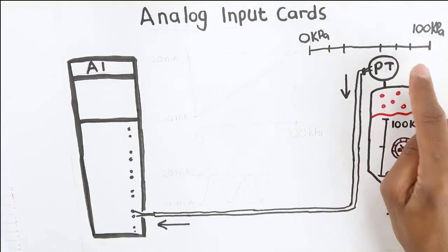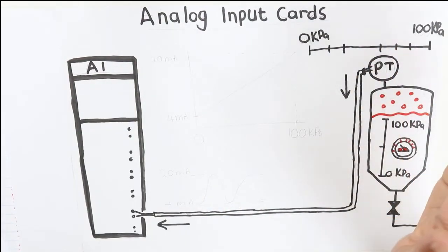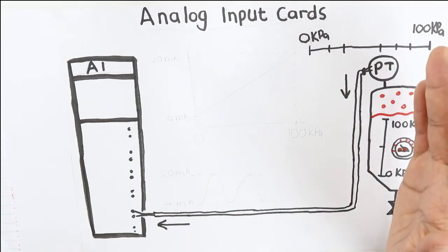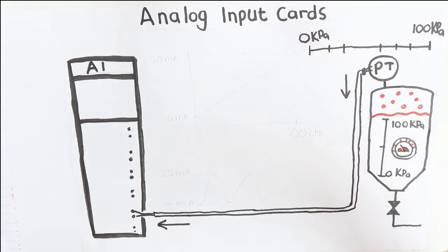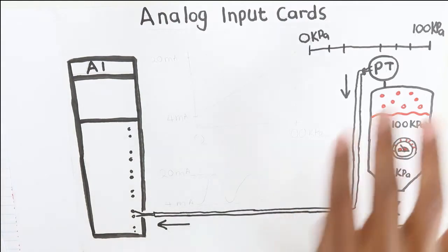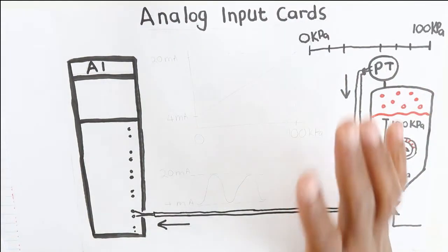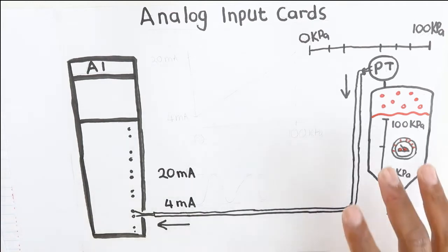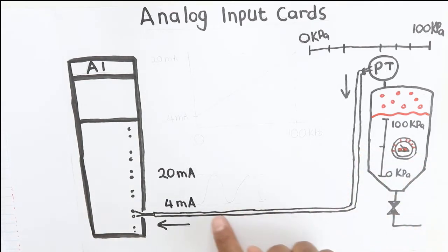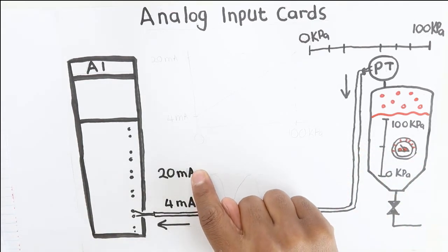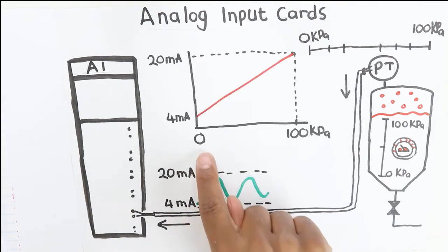Now how the pressure transmitter does this is a very interesting phenomenon which is a pure definition of mechatronics, but I will not go into that now. The most common electrical signal for transmitters is the 4 to 20 milliamp signal. This means that the pressure transmitter will map this 0 to 100 kPa pressure value to the 4 to 20 milliamp signal.